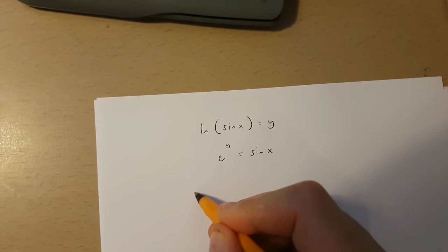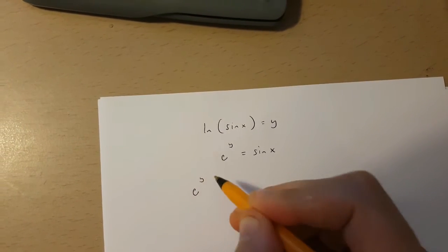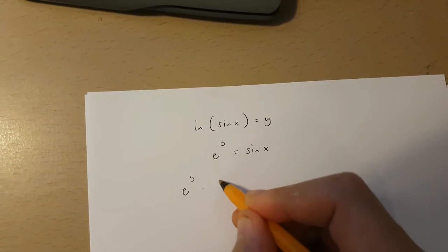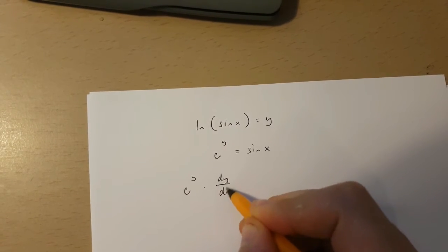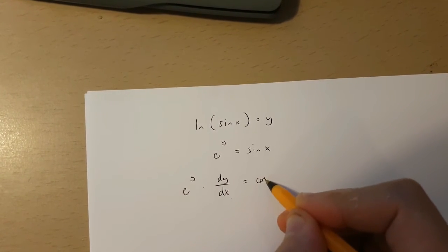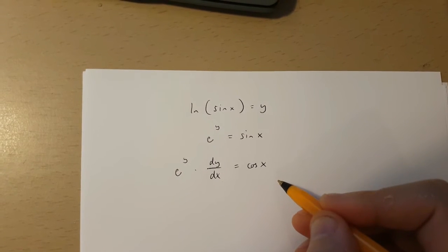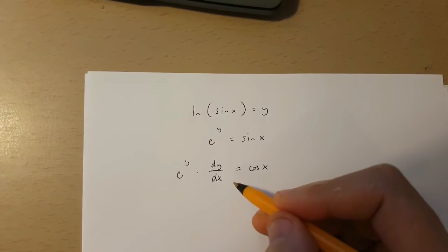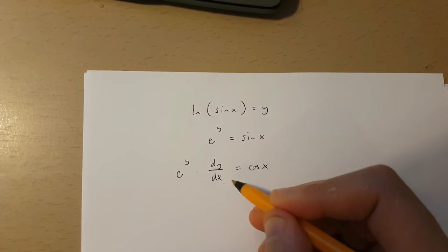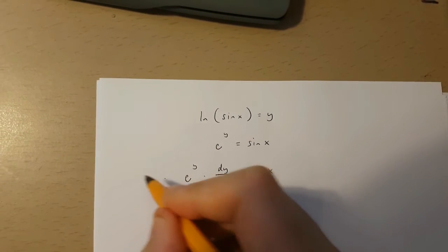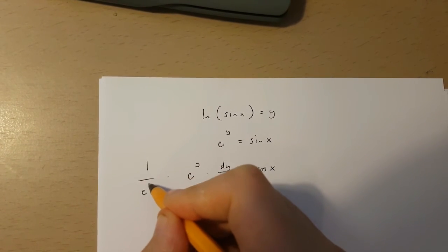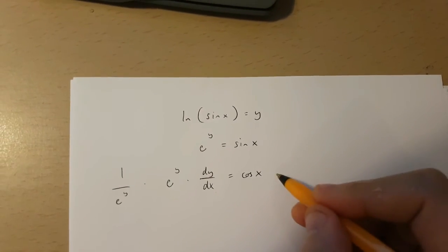If I use it I'm going to get e to the power of y times dy over dx is equal to cos x. Now to isolate dy over dx I simply have to multiply both sides of this equation by